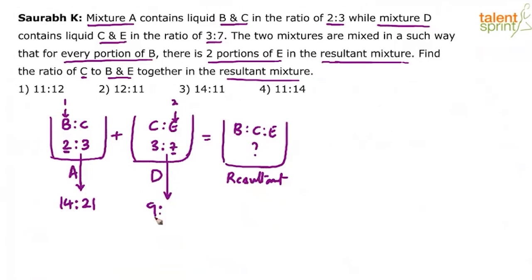14 is to 21. Oh, sorry. Sorry. We want both to be 14. So, 14 is to 21 and 6 is to 14. 6 is to 14. You are getting it? We have multiplied this by 7 and we have multiplied this by 2.